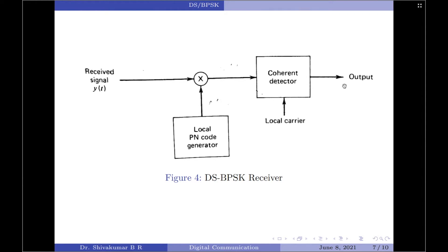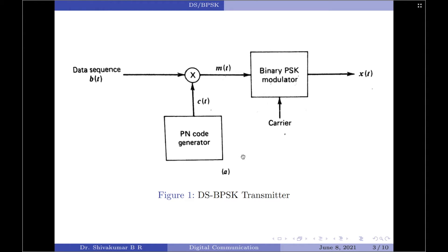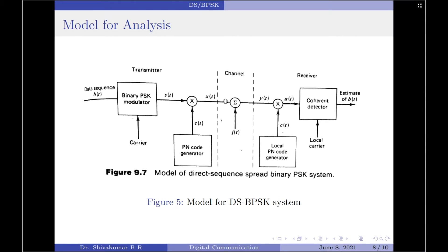I have previously discussed both DSSS as well as binary phase shift keying in two of my previous videos. I will leave the links in the description below. Please note, in the normal form of the transmitter, the spectrum spreading is performed prior to the phase modulation. However, for the purpose of analysis, we find it more convenient to interchange the order of these two operations, as shown in the model here. This exchange is permitted because both spectrum spreading and binary PSK are linear operations. This model also includes representation of the channel as well as the receiver. It is assumed that the interference represented by J(t) limits the performance, so that the effect of channel noise may be ignored.